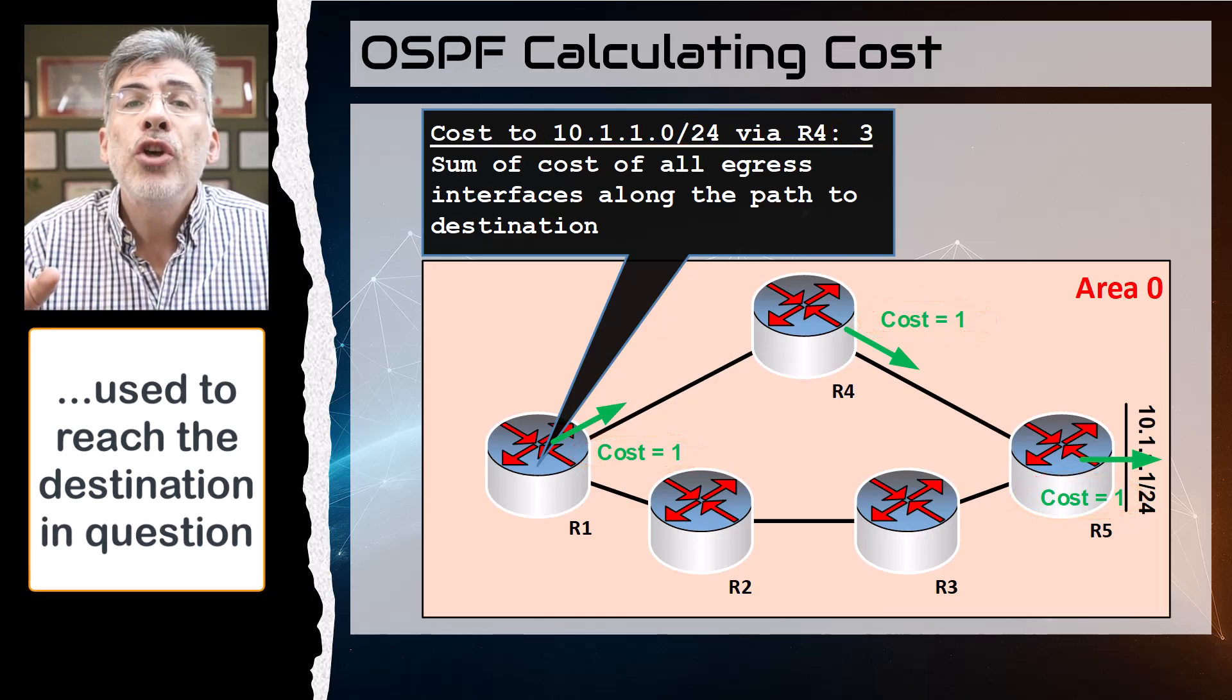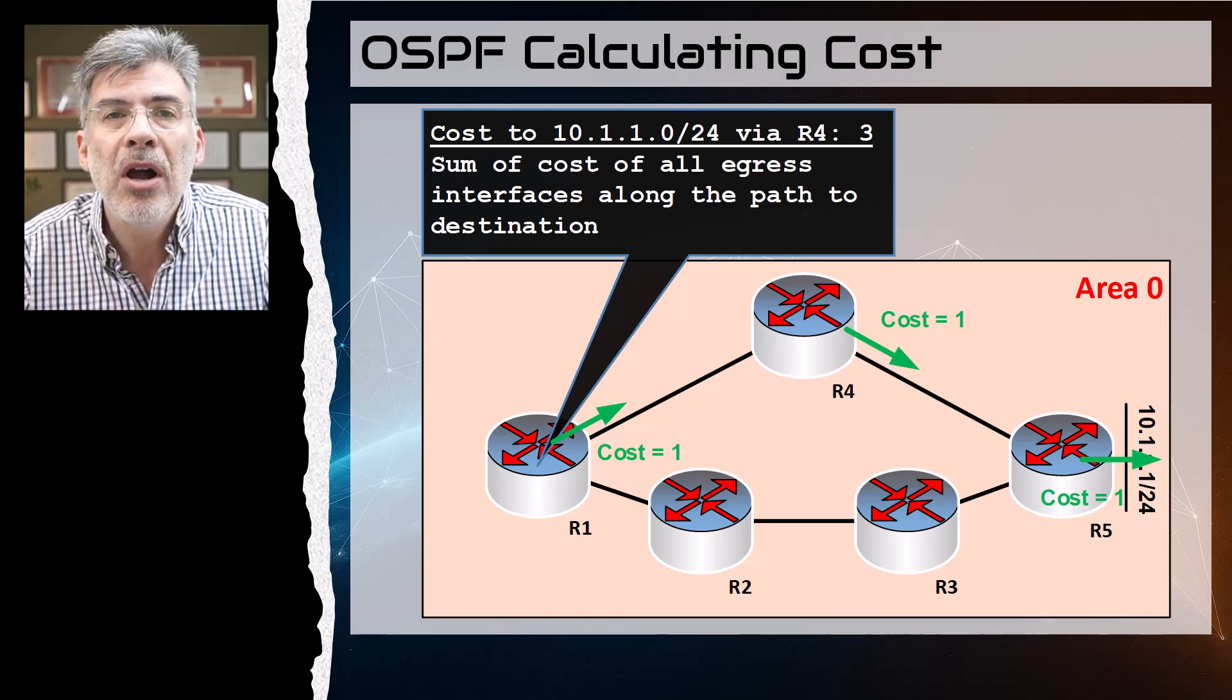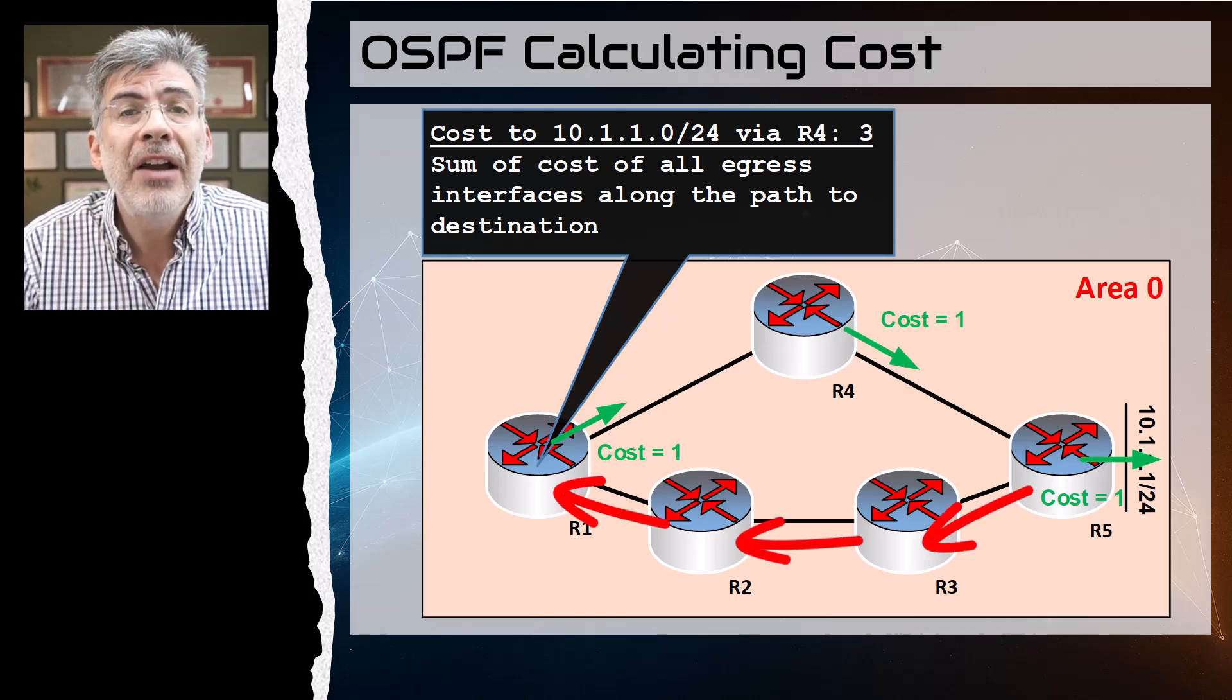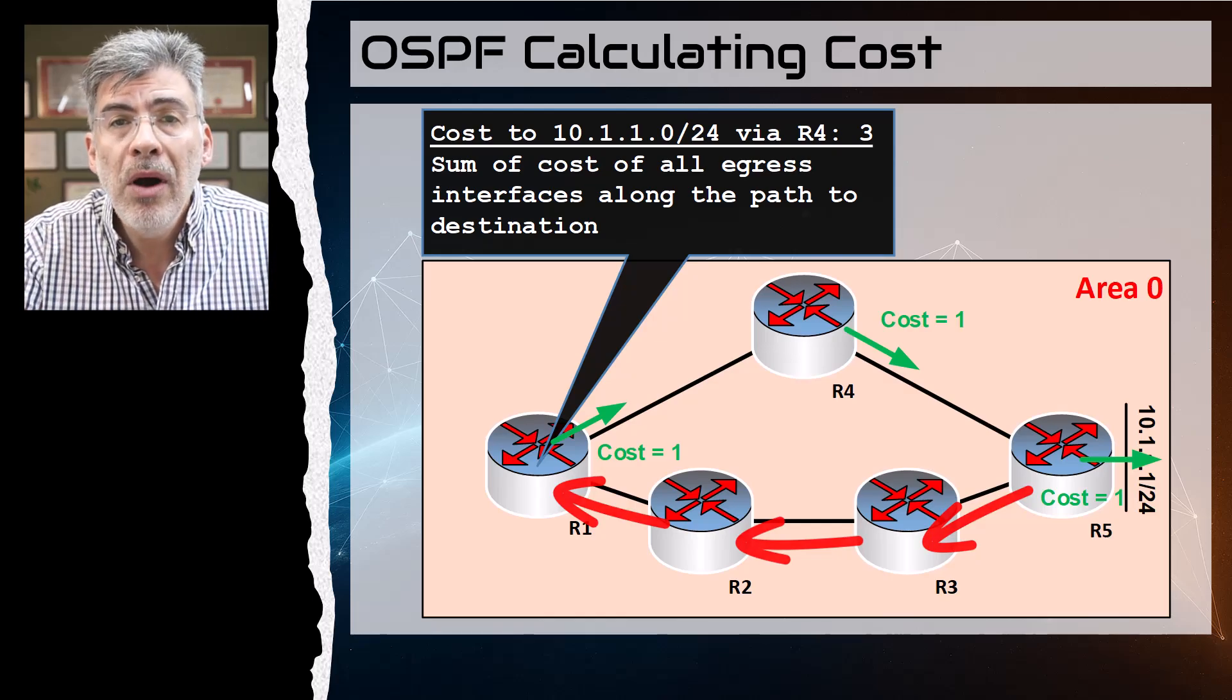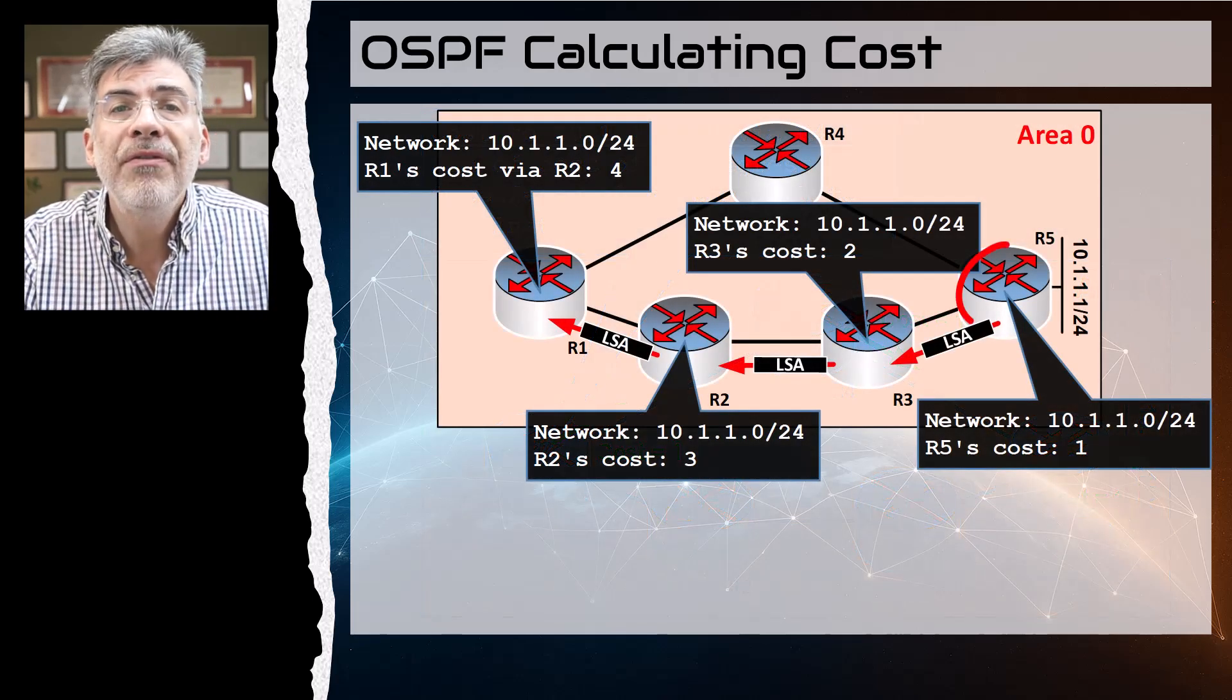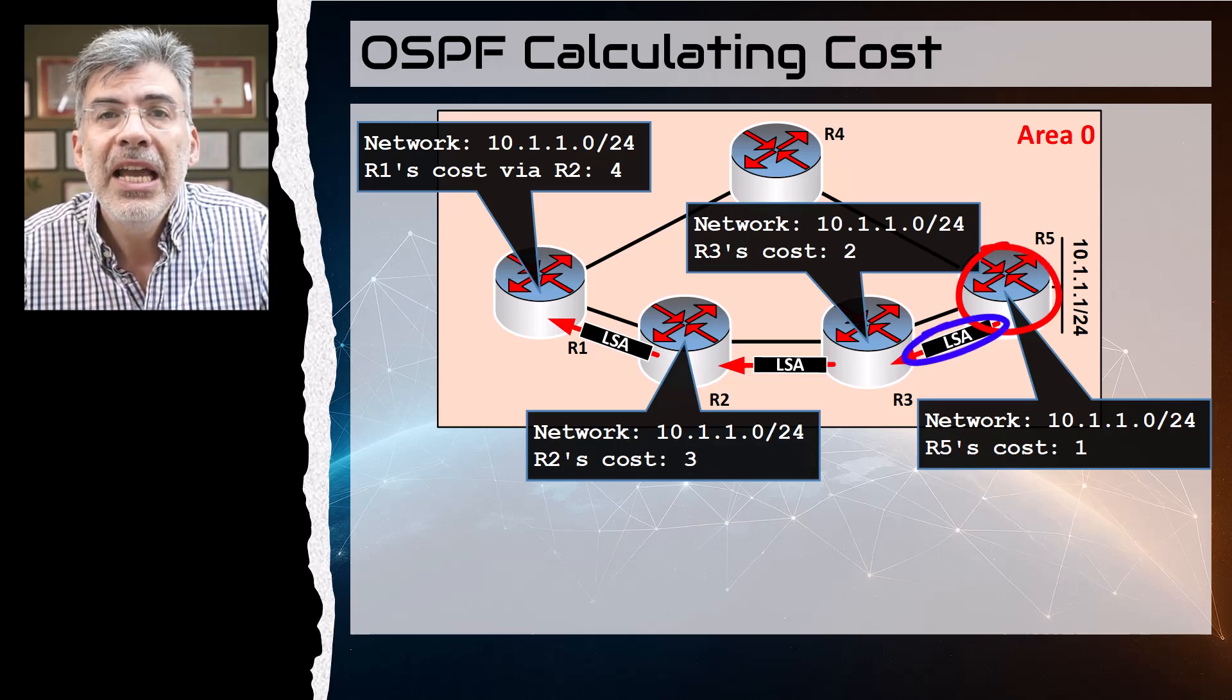Now remember, OSPF LSAs are sent to all OSPF routers in the area, so we would also have a similar process taking place along this path as well, from R5 to R3 to R2 to R1.